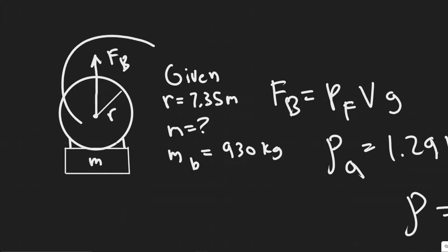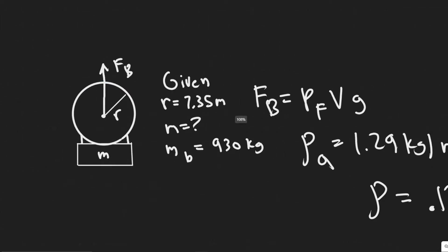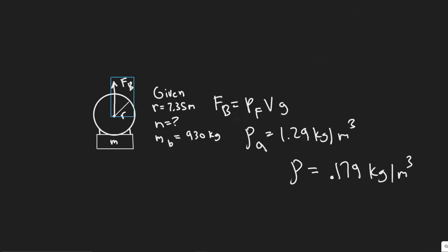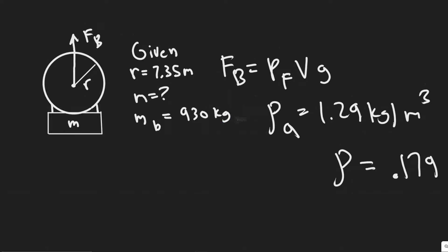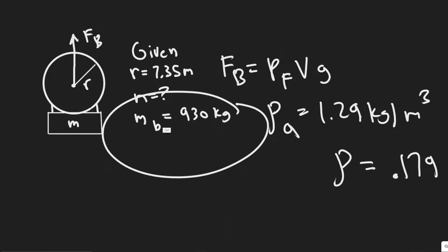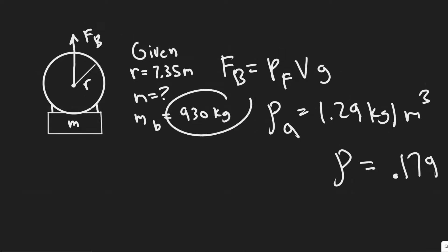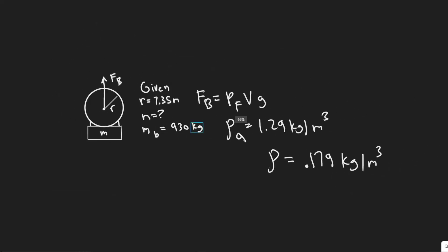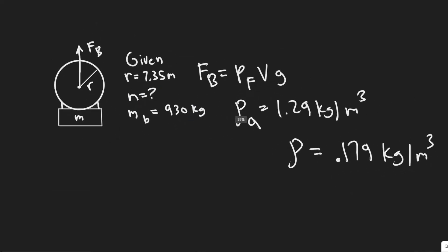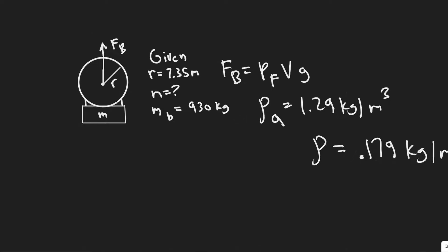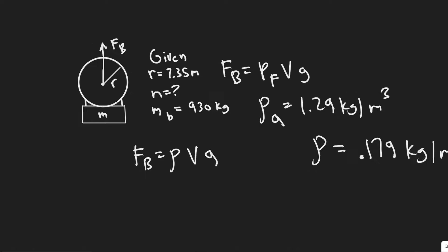The buoyancy force is what's going to be rising it, because the density of helium is much less than the air itself. We're also given the value for the mass of the balloon structure, which is 930 kilograms. The first thing we're going to want to do is find the buoyancy force FB of this balloon. The formula for this is rho times V times g.